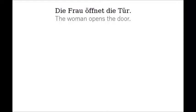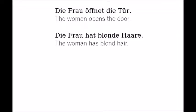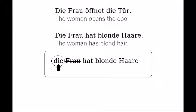Let's say you want to describe the woman in more detail. The information about the woman that you want to add can be described in a normal sentence like this: 'Die Frau hat blonde Haare' — 'The woman has blonde hair.' To make it a relative clause, you do two things: first, you remove the noun that you describe and put its article right at the beginning of the sentence. Then you use the subclause structure, which means putting verb one at the end. Now you have your relative clause and you can insert it into your sentence right after the noun.